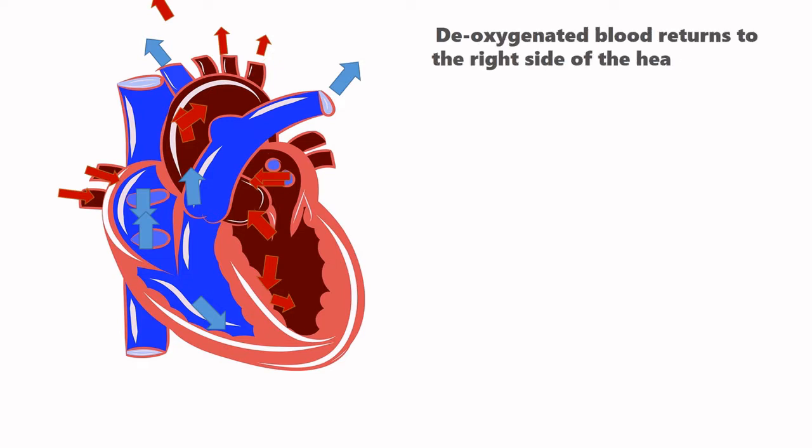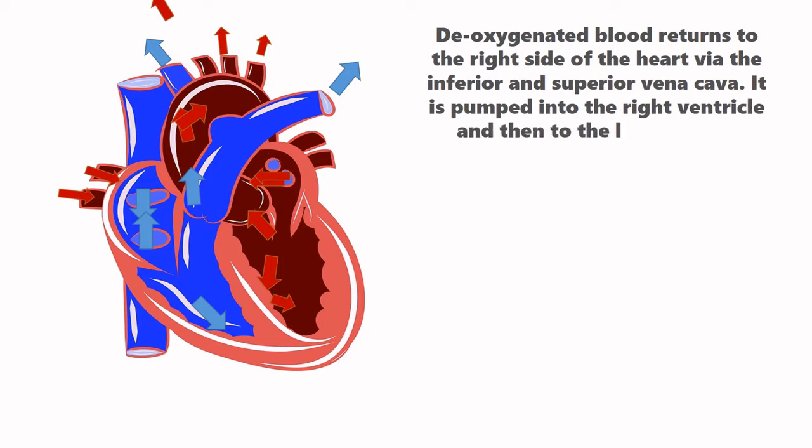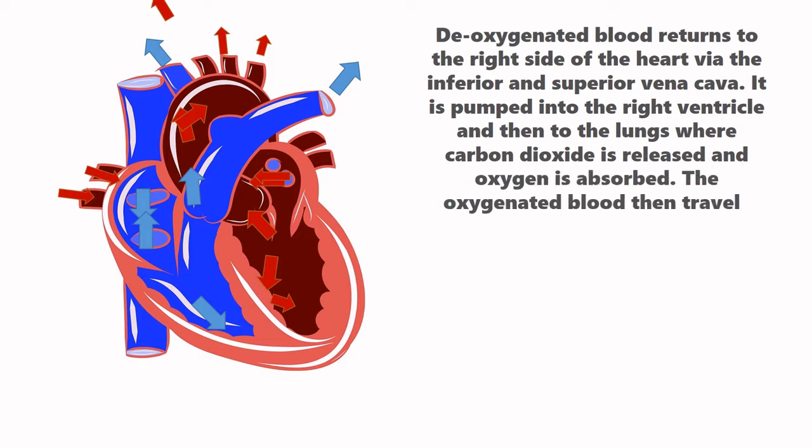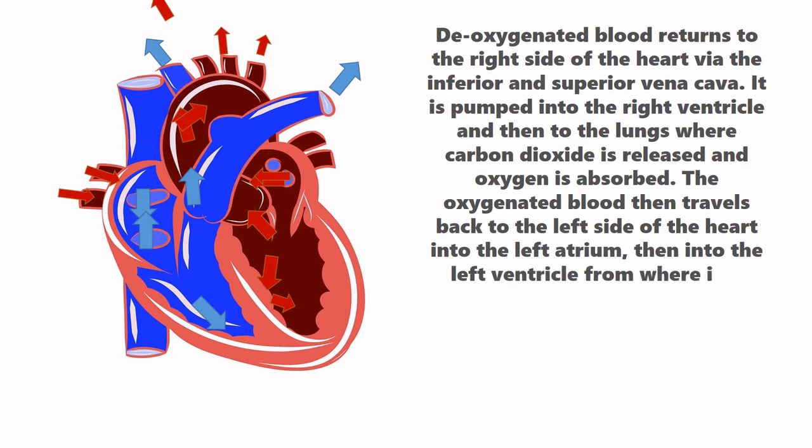Here is the summary. Deoxygenated blood returns to the right side of the heart via the inferior and superior vena cava. It is pumped into the right ventricle and then to the lungs through the pulmonary arteries. Then carbon dioxide is released and oxygen is absorbed. The oxygenated blood then travel back to the left side of the heart into the left atria. Then into the right ventricle from where it is pumped into the aorta and arterial circulation into all body parts.